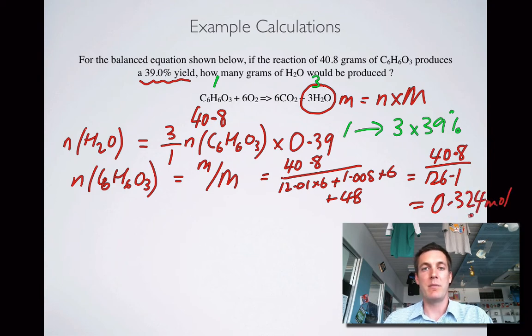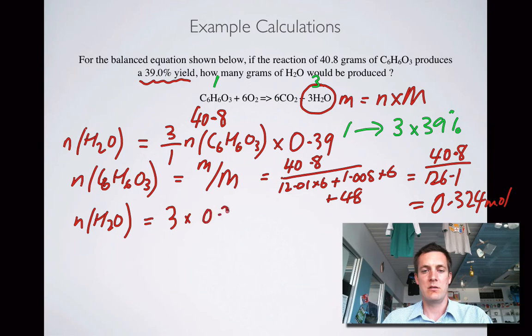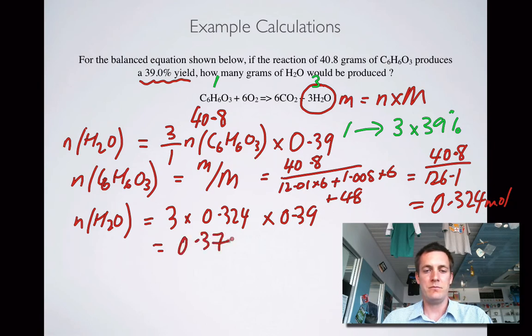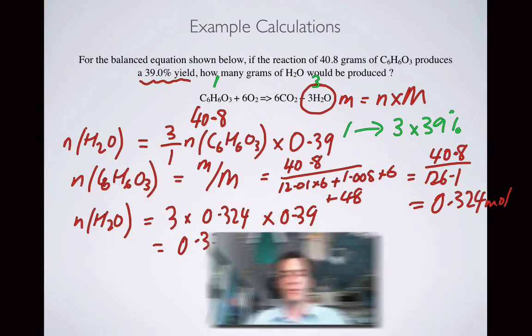And that equals 0.324 moles. And if we multiply that by 3, so the number of moles of water is 3 times that and times 0.39, then we get the answer. We get 0.379 moles.